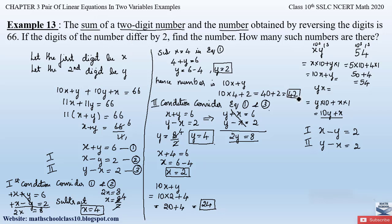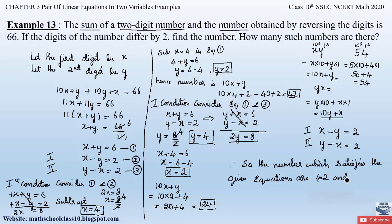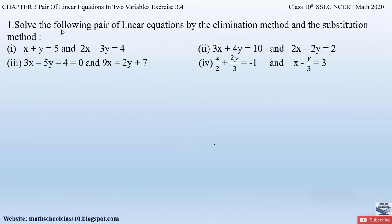We obtained two numbers — 42 and 24 — that satisfy the given conditions. Therefore, the numbers which satisfy the given equations are 42 and 24. If you have any doubts, comment below. In my next video I'll be solving question 1 from Exercise 3.4, Chapter 3. Please like, subscribe, and hit the bell button for the latest updates.